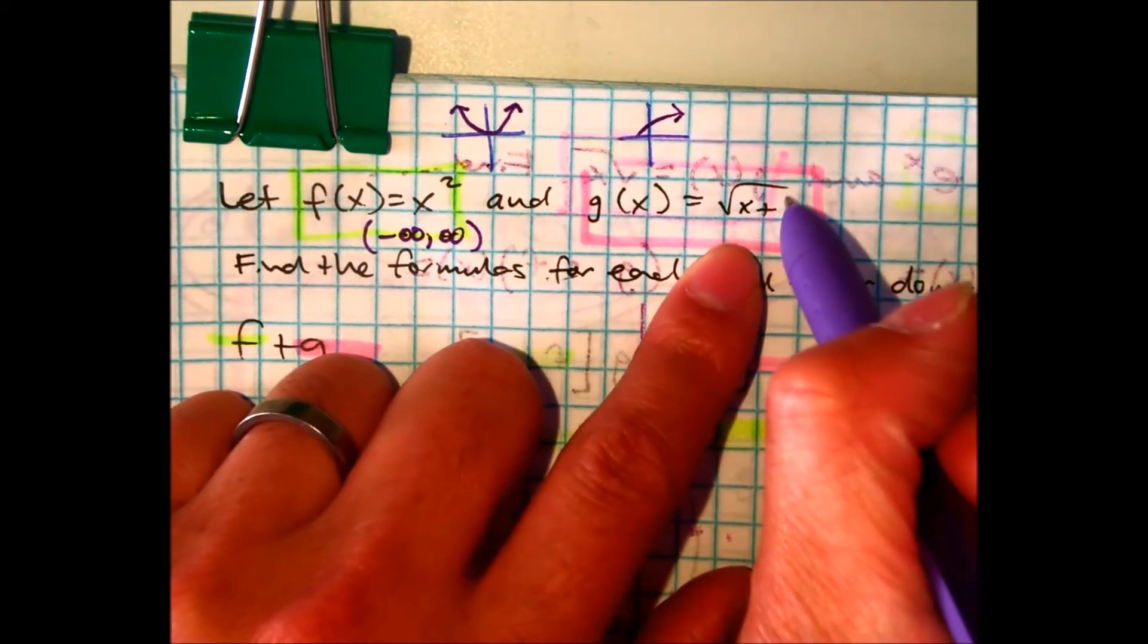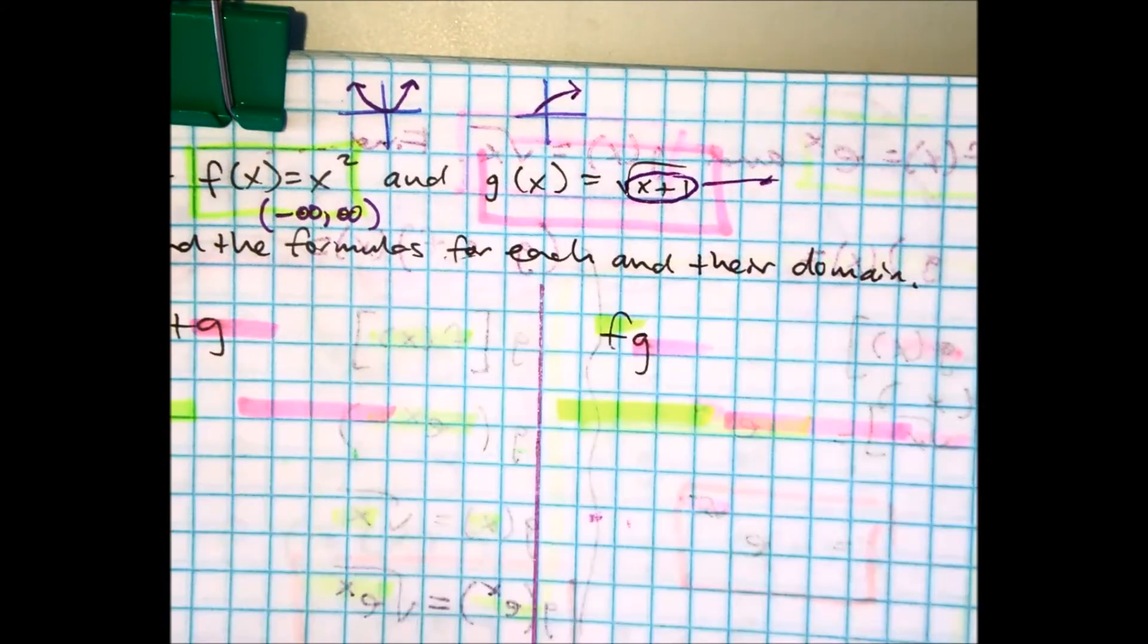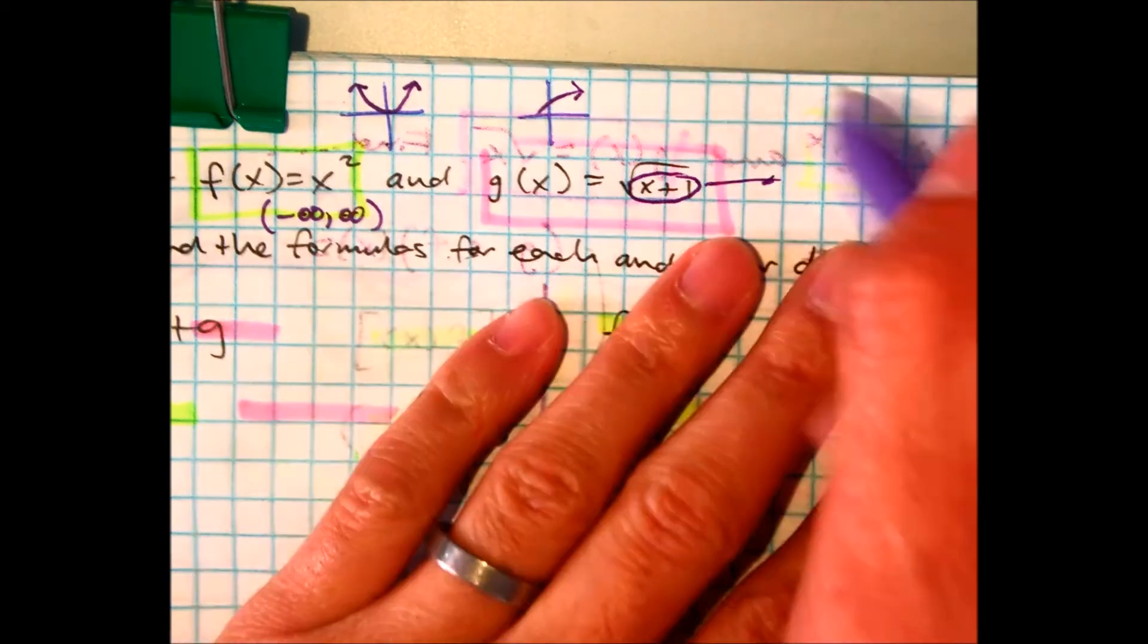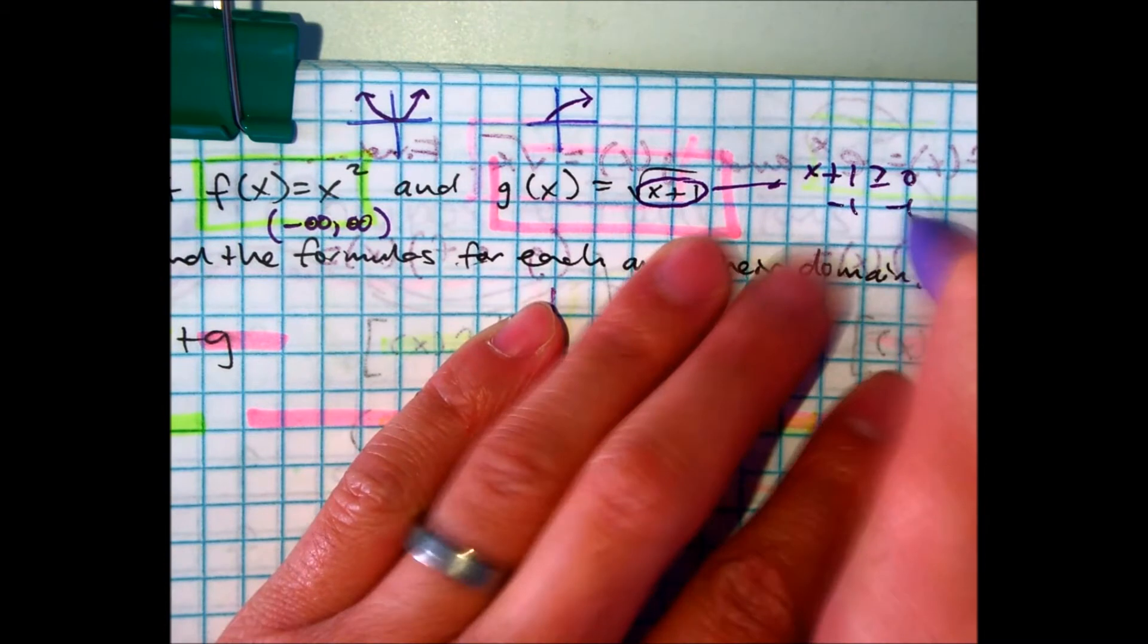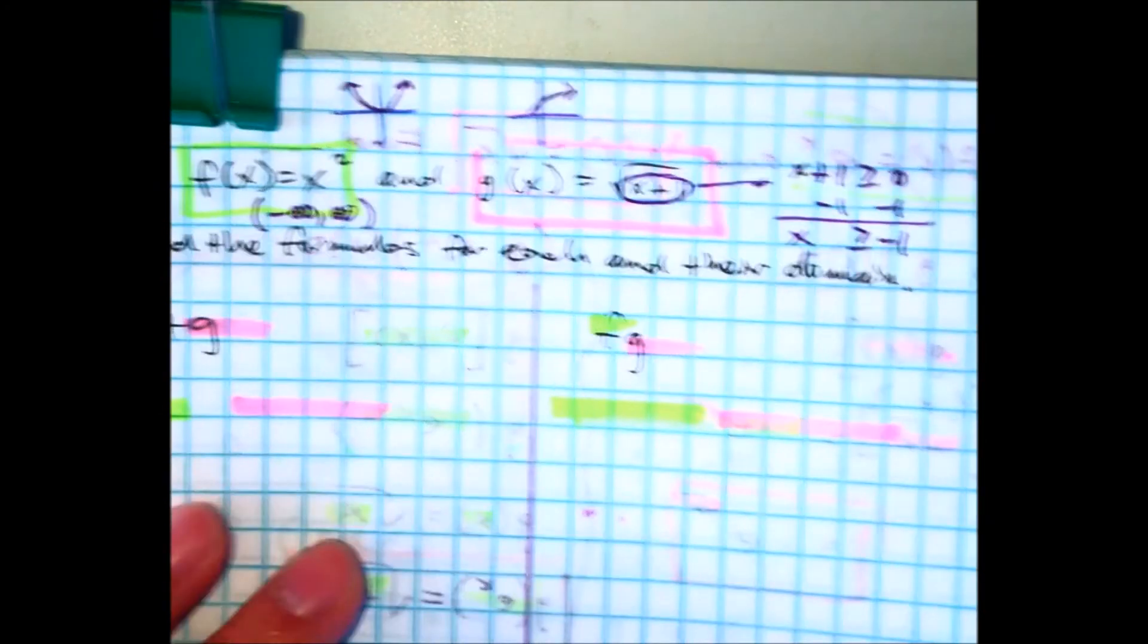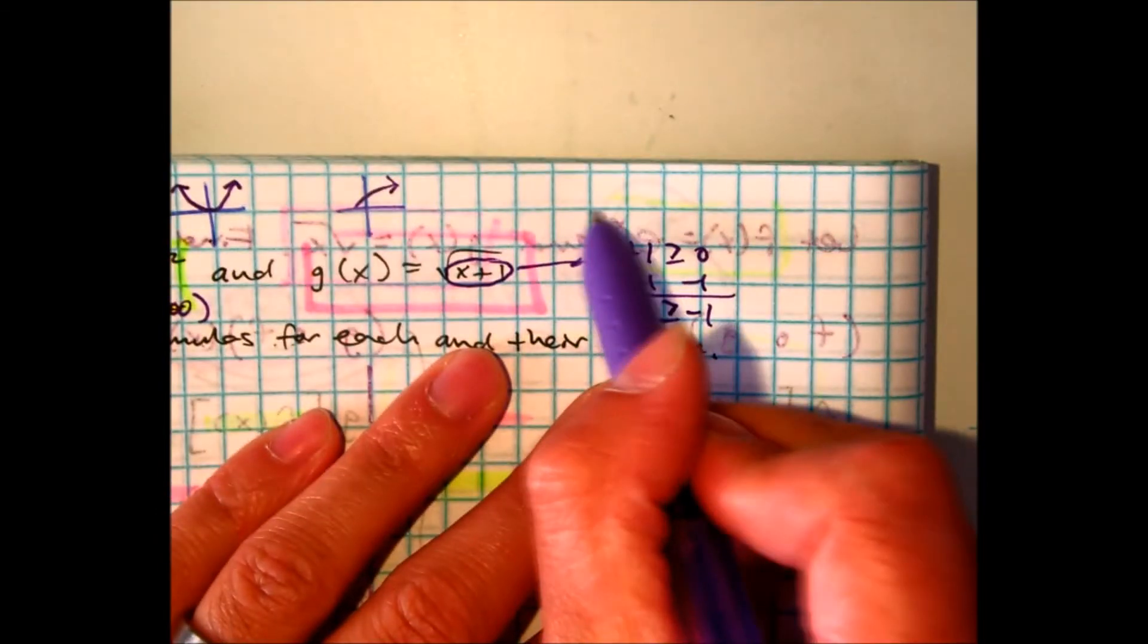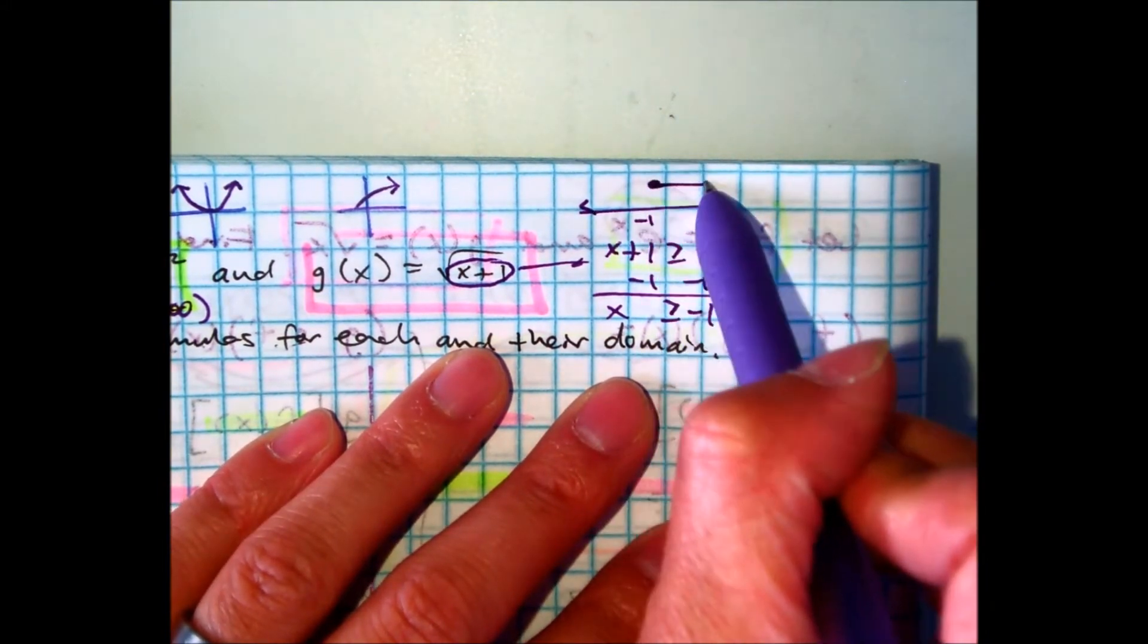You take your radicand, the number inside there, and you are setting it equal to... Not equal to zero? Greater than zero? Greater than or equal to zero? Greater than or equal to zero. If you subtract one, you would have gone, x is greater than negative one. So, if you did a quick number line at negative one, it is bigger. Yes?